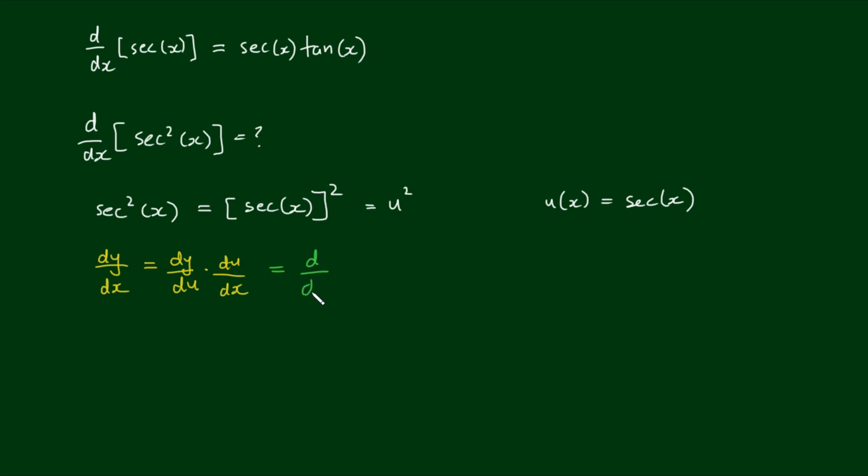So this equals the derivative of u squared with respect to u by the derivative of u with respect to x. So we have 2 times u, which is just the power reduction formula, by the derivative of the secant of x.